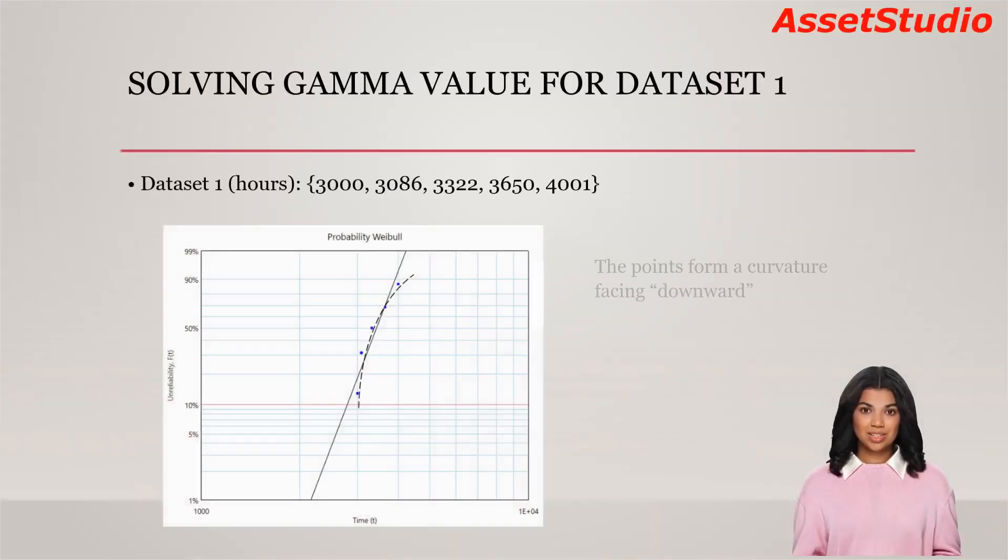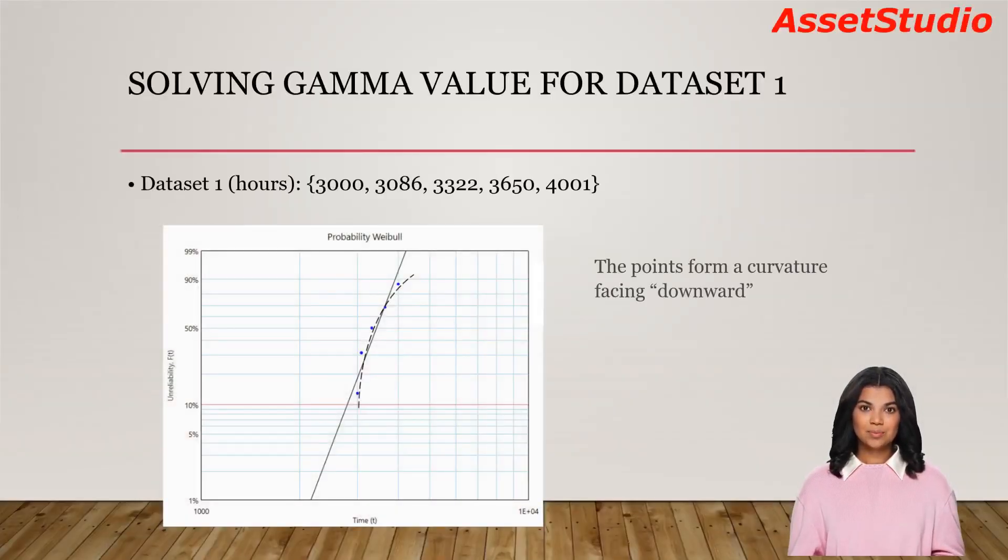Now, let me explain how gamma is calculated using dataset 1. First, the points are plotted on the probability Weibull graph. A 2-parameter Weibull line regresses along these points. Notice that the points form a curvature facing downward, as shown here.